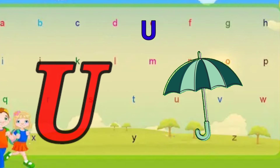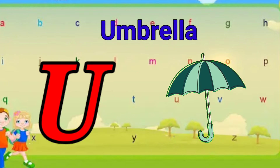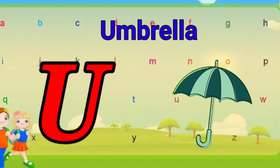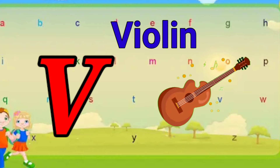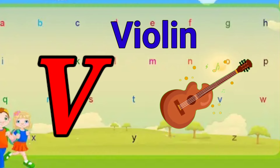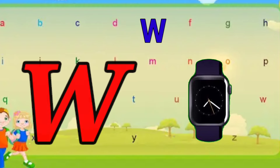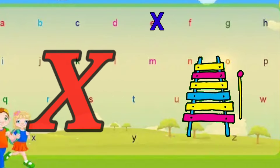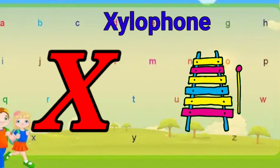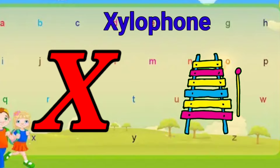U is for umbrella, u-u-umbrella. V is for violin, v-v-violin. W is for watch, w-w-watch. X is for xylophone, z-z-xylophone.